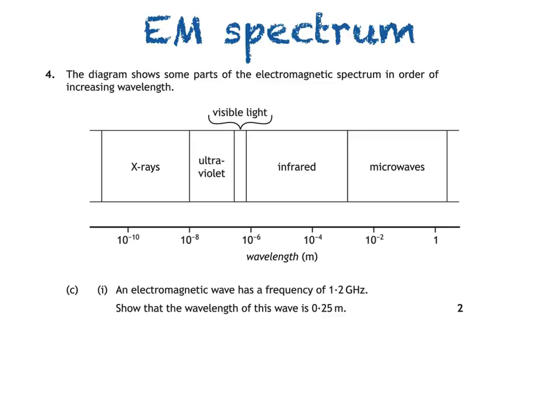It's important in questions that ask you to show something that you write down all of the working involved: the equation, substitution, and final answer with unit. In this question, you should start with the information you're given about the wave — its frequency — and end with the expected answer, a wavelength of 0.25 meters. Here's how we start: the equation V equals F lambda. A wave's speed is equal to its frequency in hertz multiplied by its wavelength in meters.